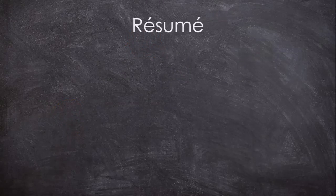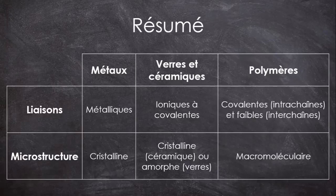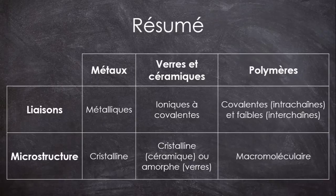Voilà donc en résumé le type de liaison et le type de structure que l'on retrouve en fonction de la famille de matériaux de façon très générale. Comme les relations structure-liaison et propriété sont très intriquées, et que l'origine d'une même propriété peut varier d'une famille de matériaux à l'autre, on traitera ça en détail plus tard.